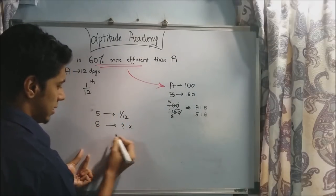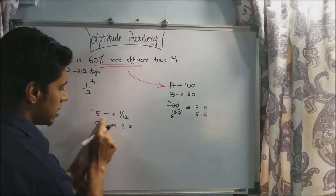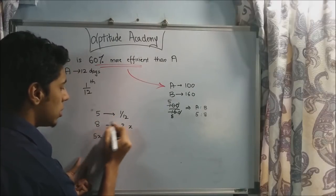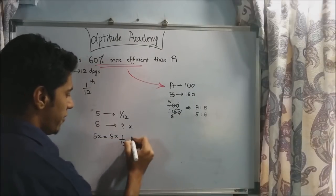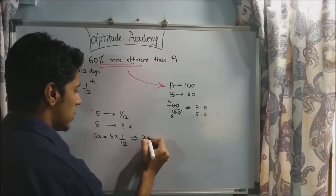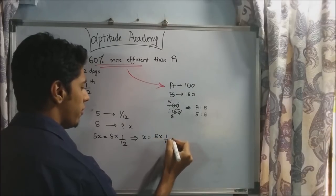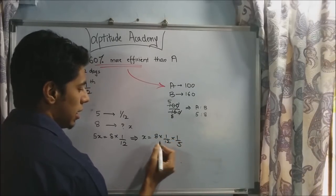So now you cross multiply. Let's say this is x. So cross multiply, we will get 5x is equal to 8 into 1 by 12. If you take 5 below, this gives you x is equal to 8 into 1 by 12 into 1 by 5.